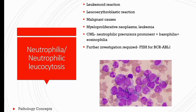When shift to left plus nucleated RBCs are seen on the peripheral blood smear, it is called leucoerythroblastic reaction. The causes of leucoerythroblastic reaction are severe infection, septicemia, hemorrhage, shock leading to acute stress response, and malignancy like myeloproliferative neoplasm, leukemia, myelofibrosis, and metastasis causing marrow infiltration.